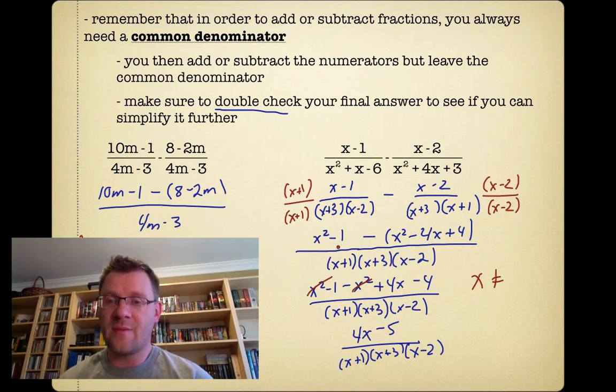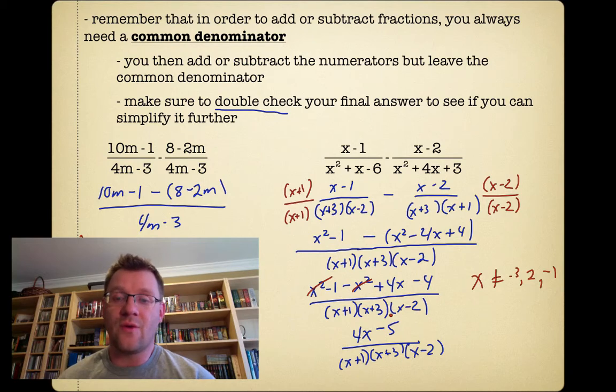Up to this step, I know that I can't have a negative 3 because of x plus 3. I can't have a positive 2 because of x minus 2. And I can't have a negative 1. And I check to see if I can cancel out any other common factors in the top and the bottom of this expression. And I can't because that's 4x minus 5. And so I leave it as is. And this is the combined version, or if you were to subtract these two fractions.